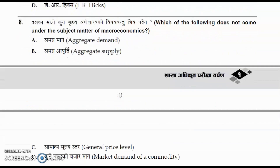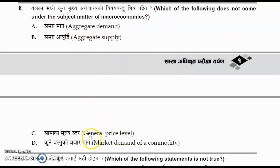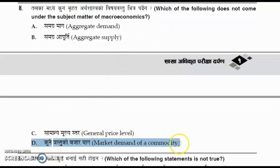The correct answer is J.M. Keynes. Question number four: which of the following does not come under the subject matter of macroeconomics? The options are aggregate demand, aggregate supply, general price level, and market demand of a commodity. The correct option is option D.